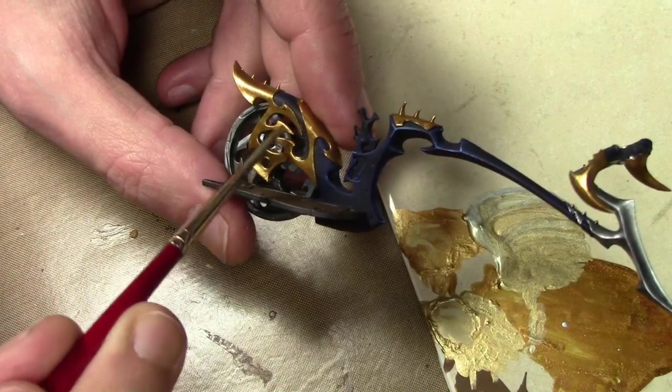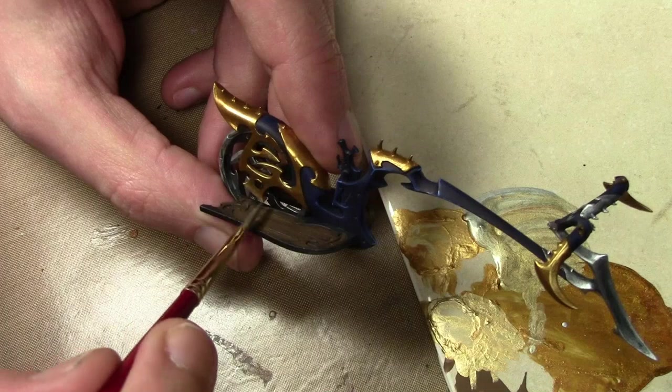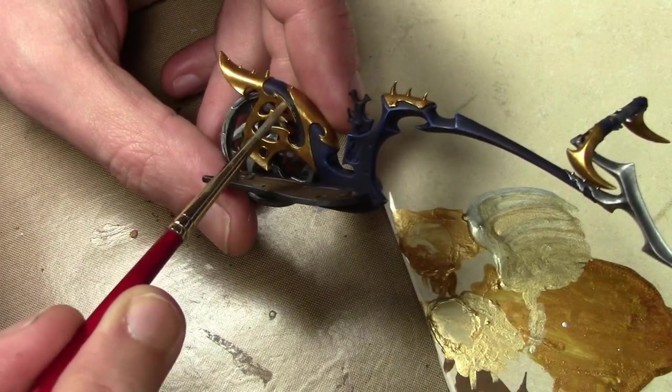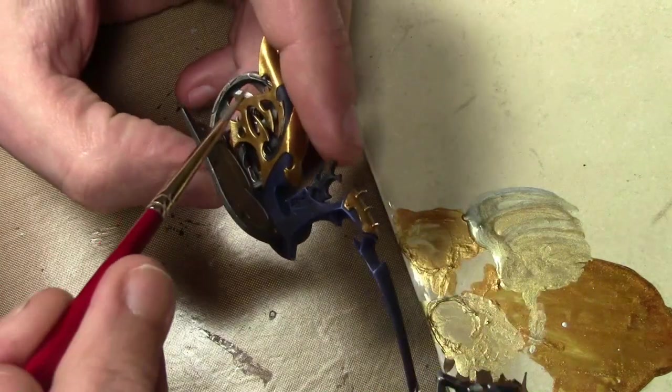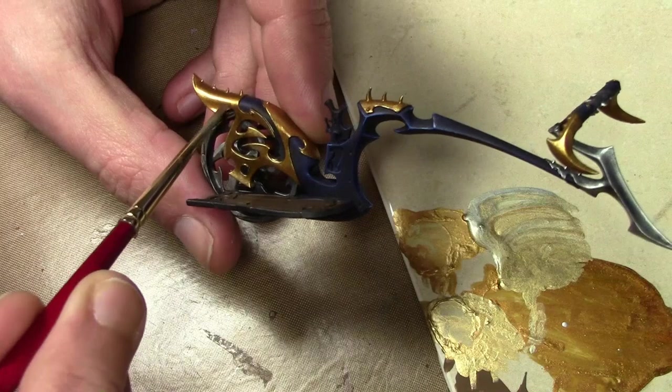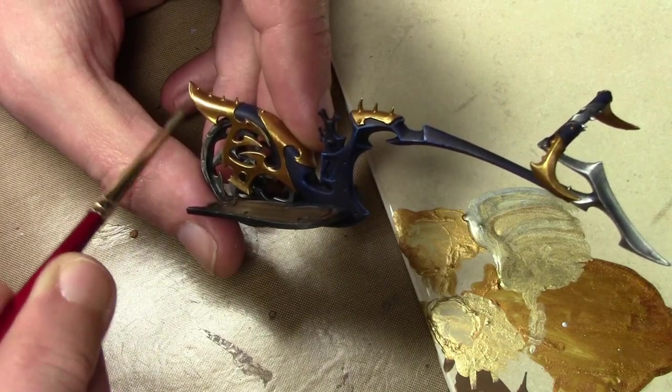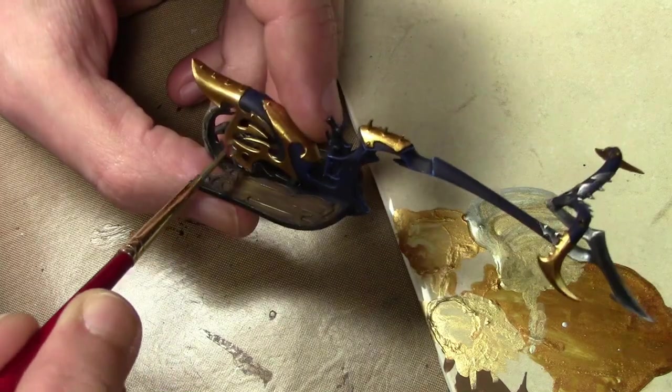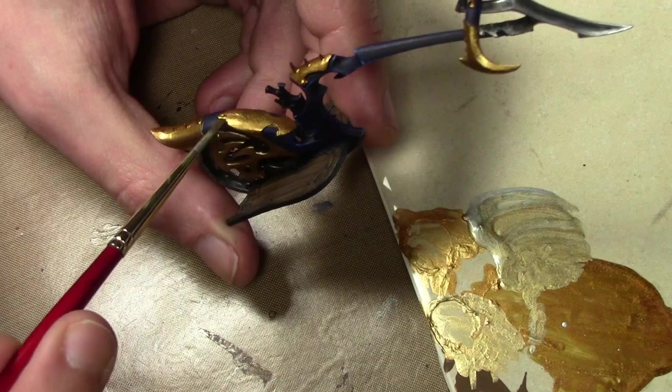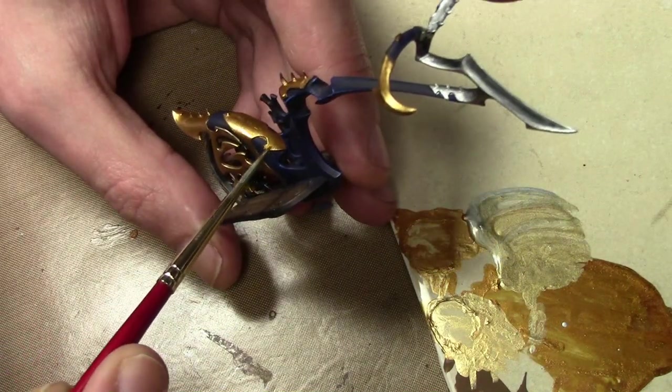And then for the highlights, I mixed in some Vallejo Model Air Steel with the previous gold color and hitting the edges. I did this twice, second time adding more steel to pick out the tips here and there. You want to be careful when highlighting gold. Don't add too much of your silver or steel color because then it stops looking like gold. I normally use only one highlight but I did use two on this figure just because there was such a huge surface area of gold to paint.